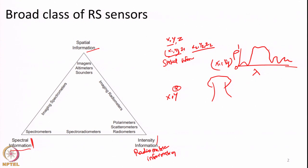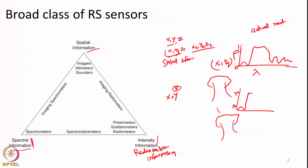On the other hand, rather than collecting the reflectance value (which is between 0 to 1), if I collect the actual amount of radiance — say for this particular tree, the radiance recorded at the green band is some 10 units and at the NIR band is some 50 units — if I collect the actual radiance recorded, the actual energy that came in and got reflected, and measure it quantitatively, I call it radiometric information or intensity information.